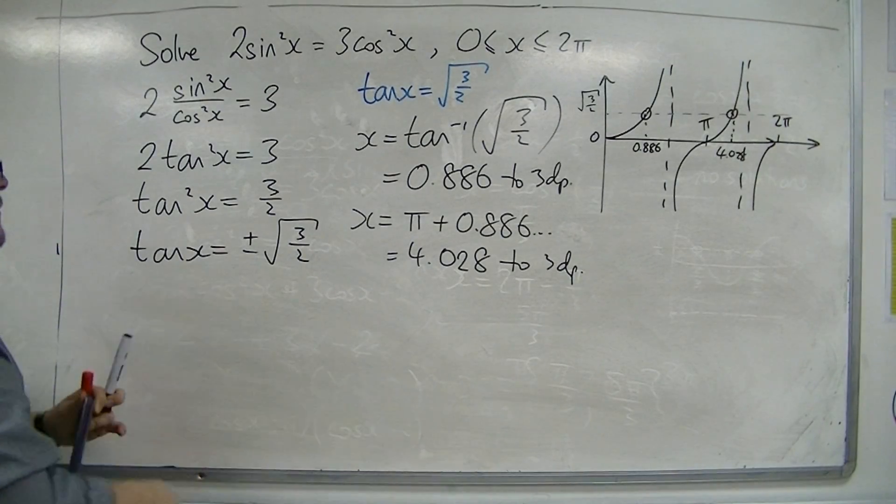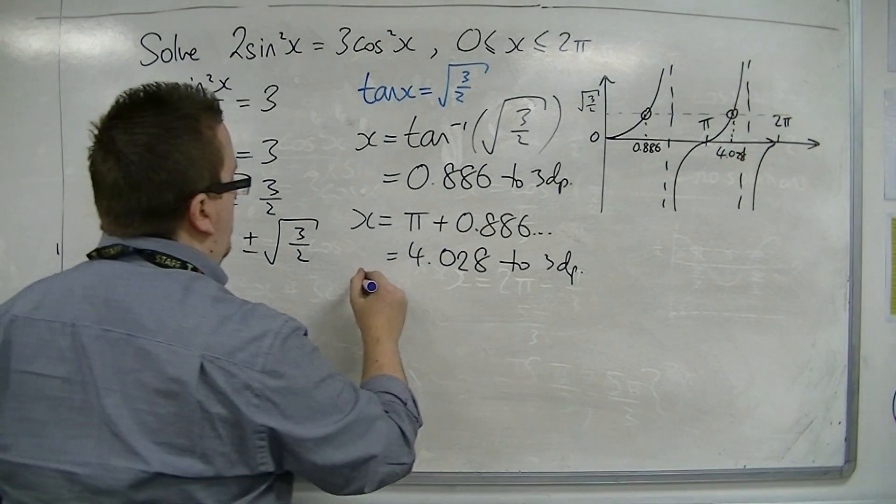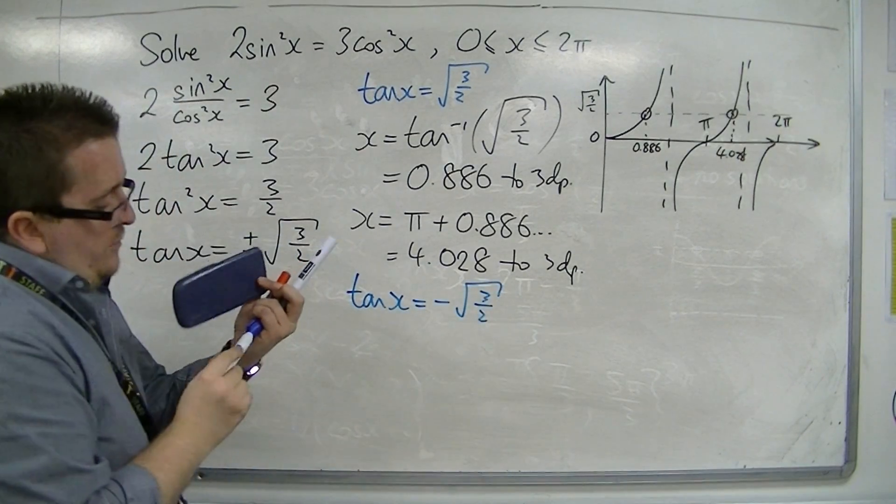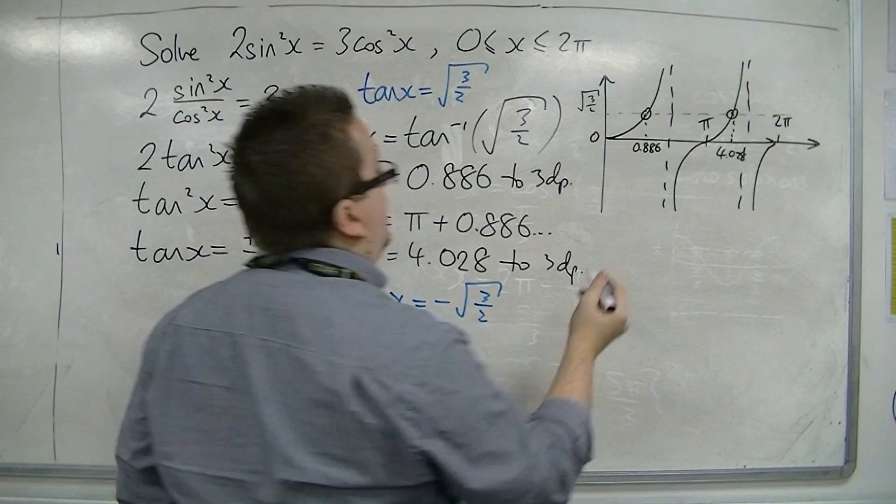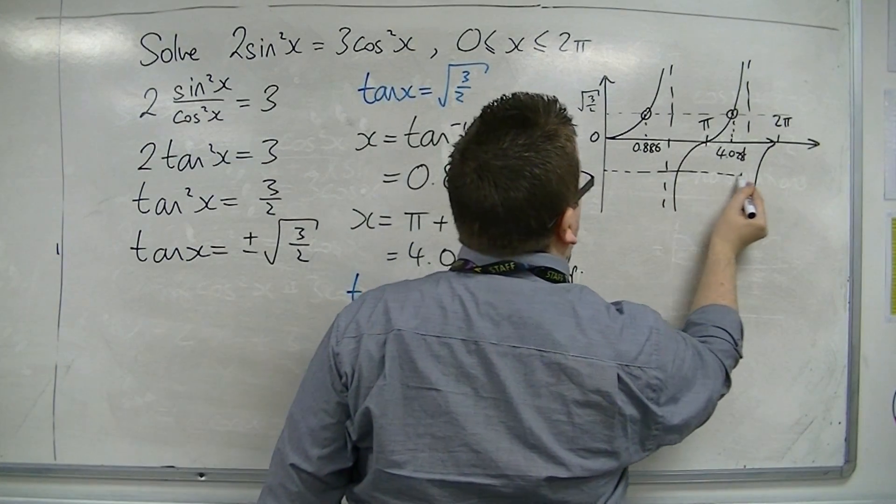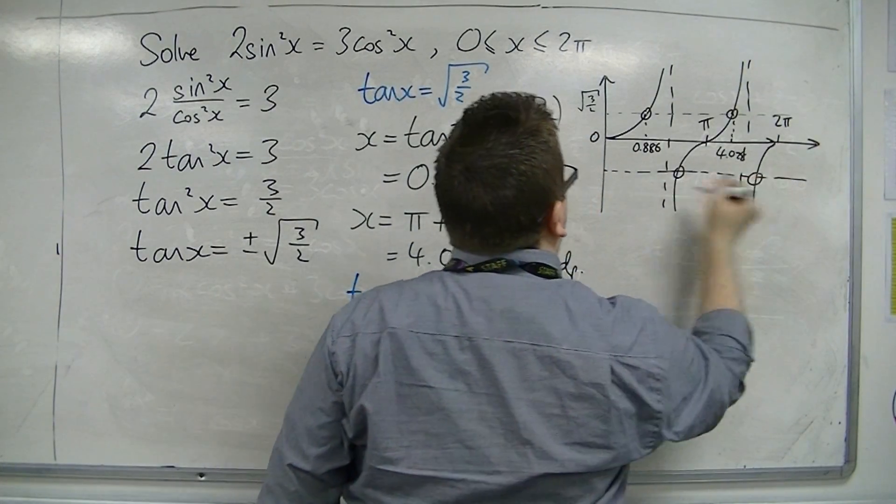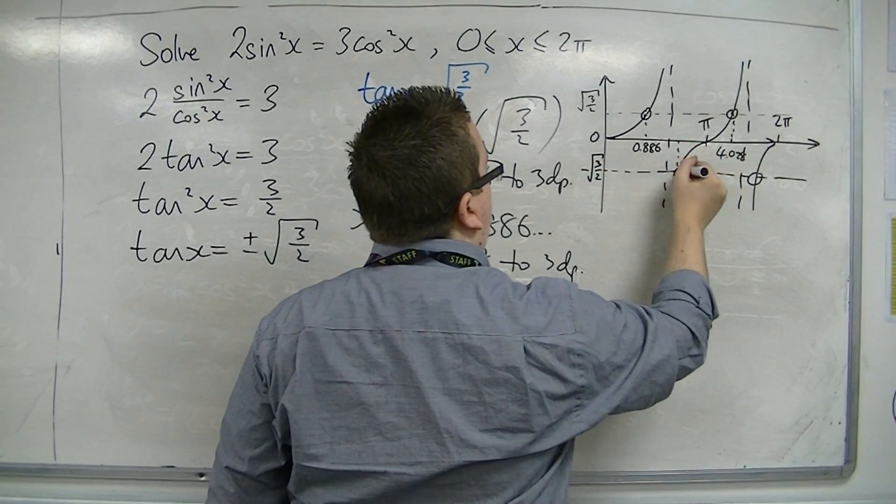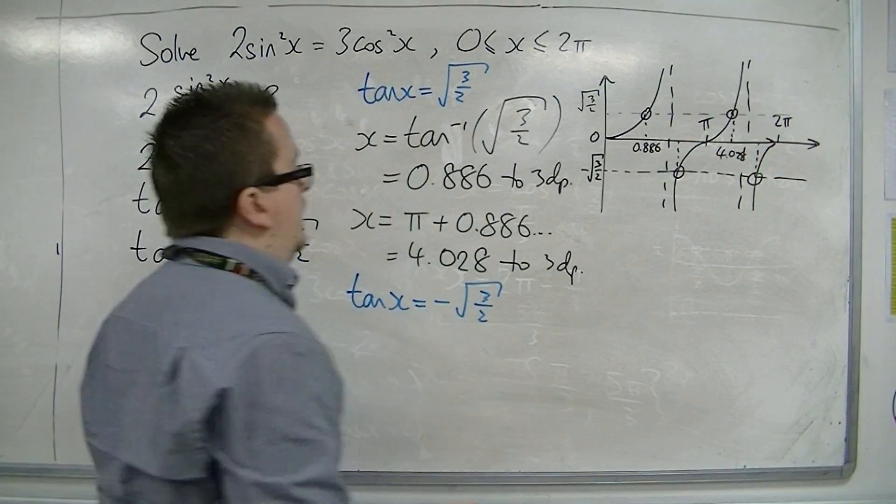Now we also have to deal with tan x equals minus root 3 over 2. We're expecting two solutions there and there.